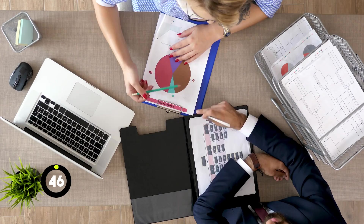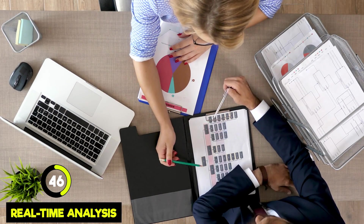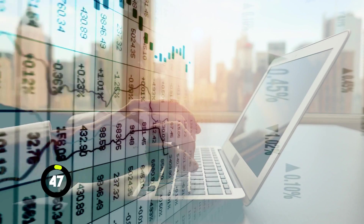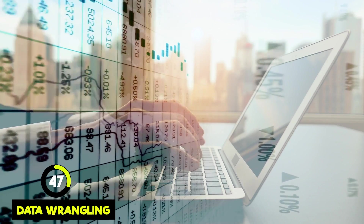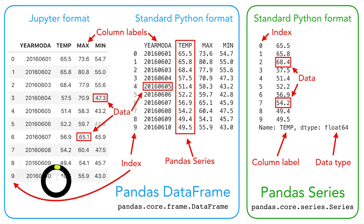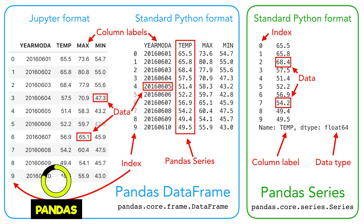A business might look at sales numbers as a KPI to see how well they're performing. Real-time analysis is when you look at data as it comes in and analyze it right away. Data wrangling is like cleaning and organizing your data so it's easier to work with. Pandas is a very common Python library used for data manipulation and analysis that every data analyst should be aware of.